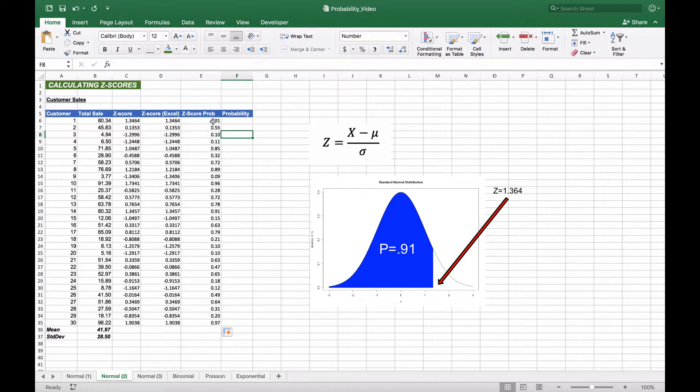And at 80, we have about 91%, again because it's significantly further to the right of the mean, so the majority of the curve will be to the left. And things that are very small here, like 4.94, will be 0.10 in terms of probability, or 10% of the probability.